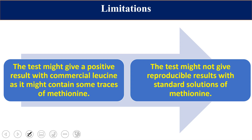To summarize: we have two sulfur-containing amino acids — cysteine and methionine. Cysteine can be detected by the nitroprusside test, and methionine can be detected by this Sullivan and McCarty test.